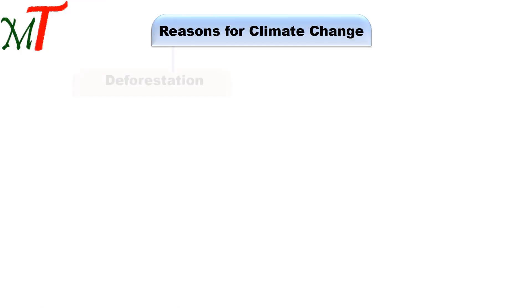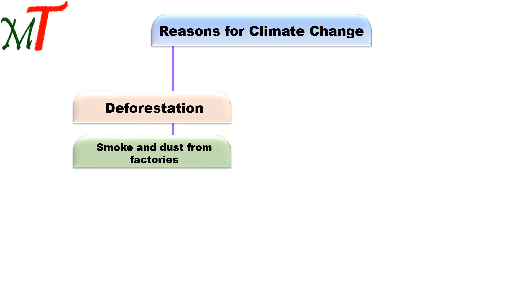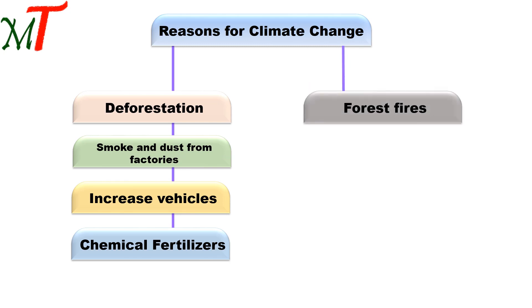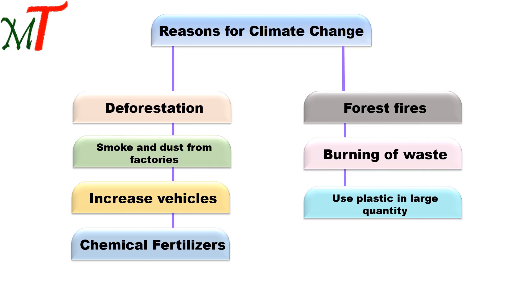There are some more causes. We already know about deforestation. Other causes include smoke and dust from factories, increased vehicle emissions producing smoke and dust, chemical fertilizers — nowadays farmers use plenty of chemical fertilizers on their crops, which is also a reason for climate change — forest fires, burning of waste, and the use of large quantities of plastic. These are the main reasons for climate change.